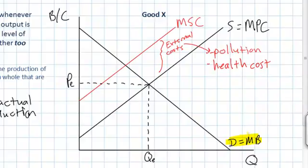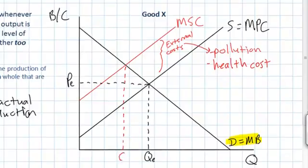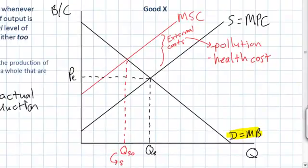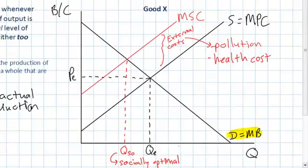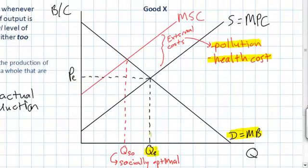When we look at marginal benefit, this represents the demand for consumers of Good X — downward sloping because the more of Good X consumed, the less additional benefit society receives. When the marginal benefit intersects the marginal social cost of production, we get a lower quantity demanded and supplied, which we'll call QSO — the socially optimal quantity. QSO is socially optimal because at this quantity the level of output corresponds with the marginal social costs and the marginal benefit of consumers. Since firms externalize costs, their private costs are lower, so the quantity actually produced — QE — is greater than the socially optimal quantity.